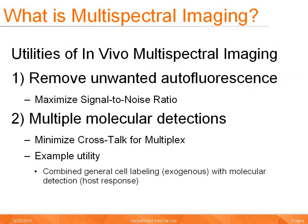The utility of in vivo multispectral imaging is twofold. Multispectral imaging is used to remove unwanted tissue autofluorescence, which allows for an improved signal-to-noise ratio and therefore an overall improved sensitivity. Multispectral imaging can also allow for multiple molecular detections through the reduction of crosstalk, providing the potential to improve experimental design. An example application might be combined imaging of fluorescently labeled exogenously administered cells and a complementary fluorescent molecular reporter for a host response.